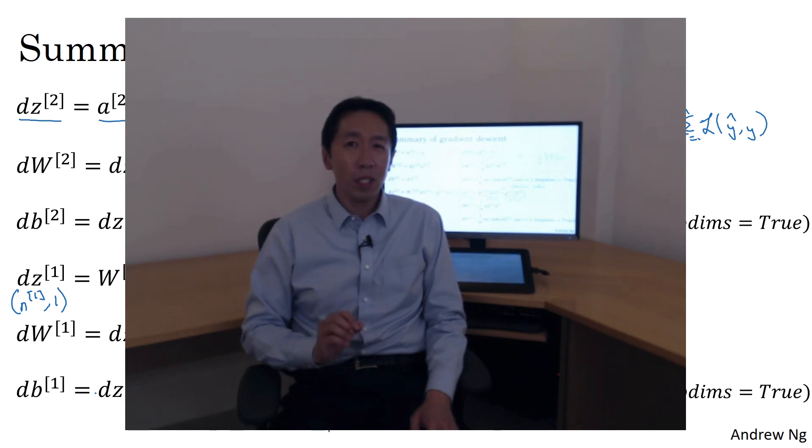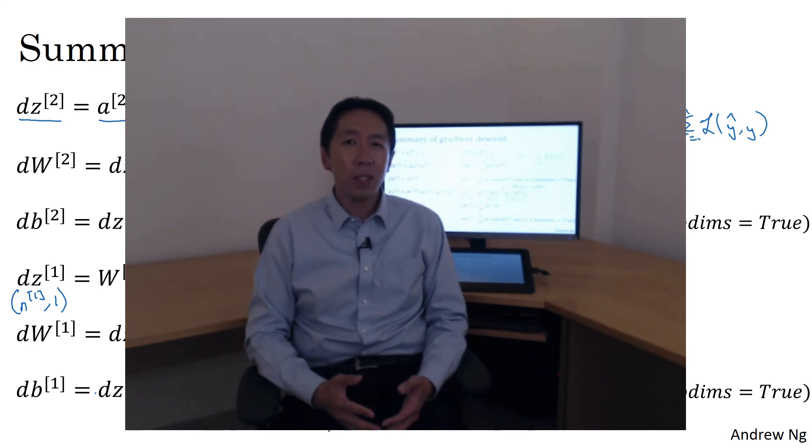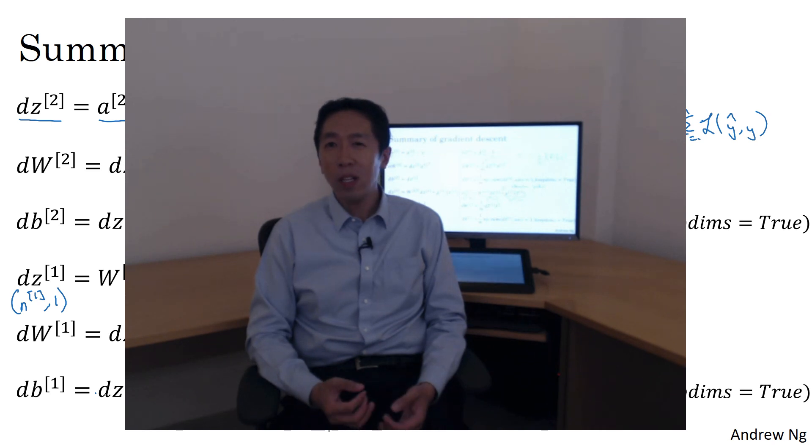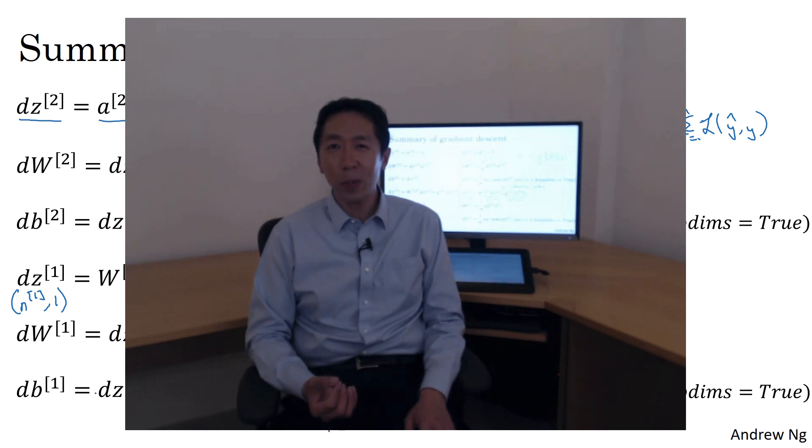So with that, there's just one last detail I want to share with you before you implement your neural network, which is how to initialize the weights of your neural network. It turns out that initializing your parameters, not to zero but randomly, turns out to be very important for training your neural network. In the next video, you'll see why.